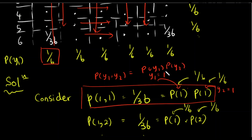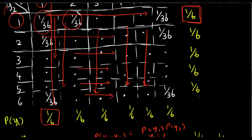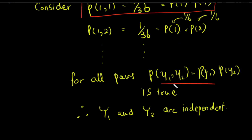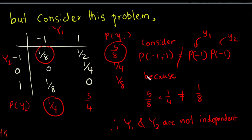We will use p1 and p2. We can use random variables and we can also use a condition. We can use the condition p(y1, y2) = p(y1) · p(y2) to check independence.